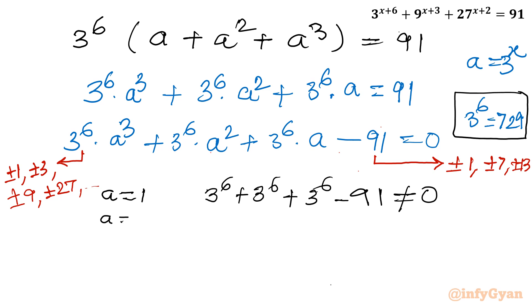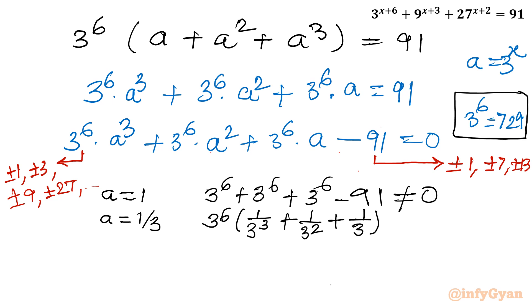Now let's take the ratio 1/3. Taking 3^6 common, what is left is a^3 + a^2 + a. So putting a = 1/3: (1/3)^3 + (1/3)^2 + (1/3) = 1/27 + 1/9 + 1/3. Multiplying through by 3^6 gives 27 + 81 + 243 = 351, minus 91 gives 260. Again, it is not satisfying the equation.